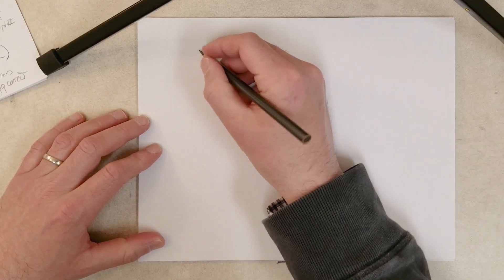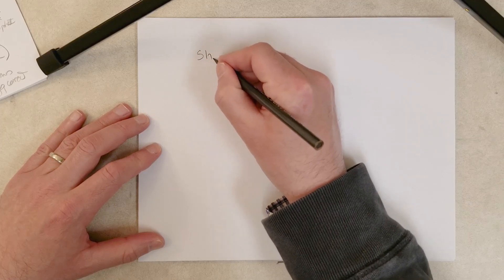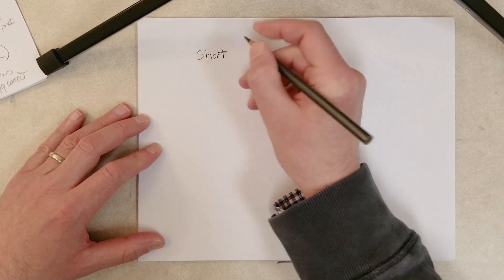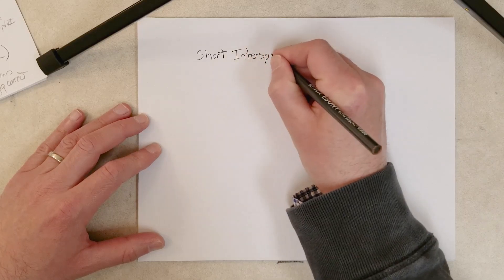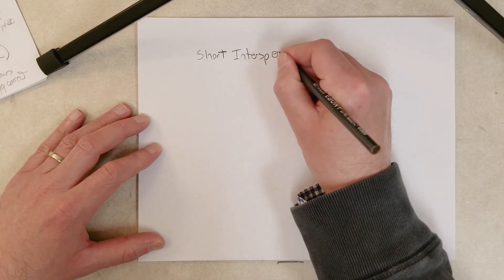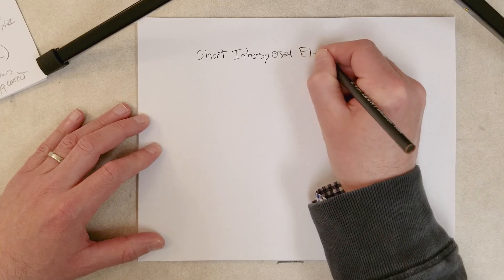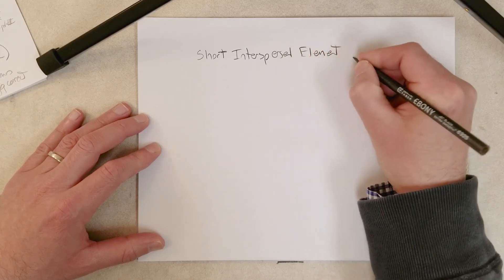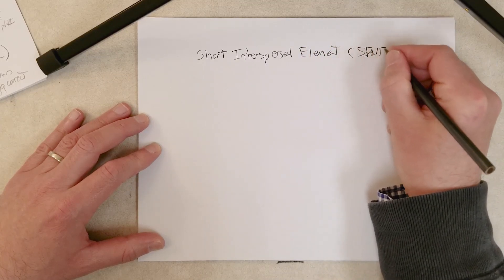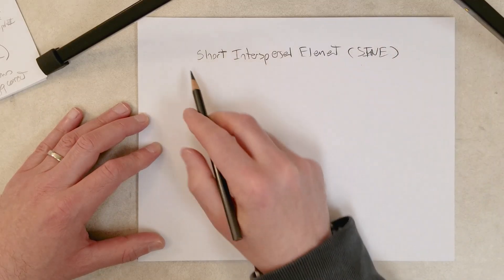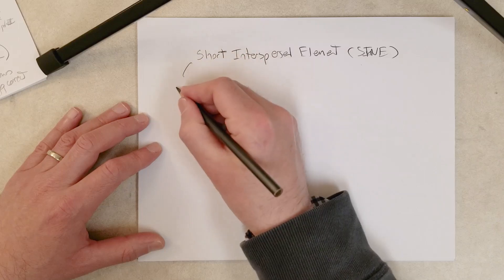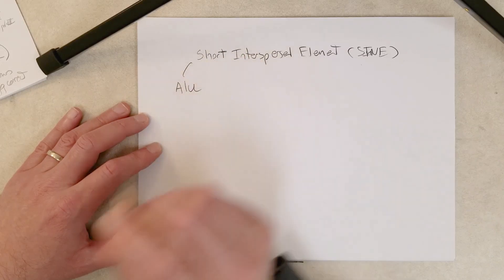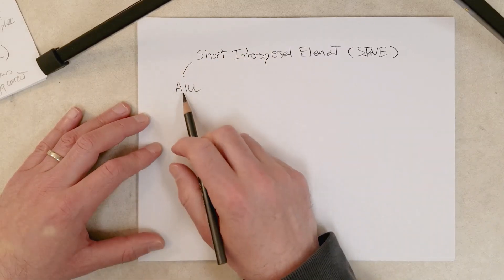Hey everybody, in this video we are going to take a look at a short interspersed element in the human genome, a SINE. The most important and most common one is called ALU.